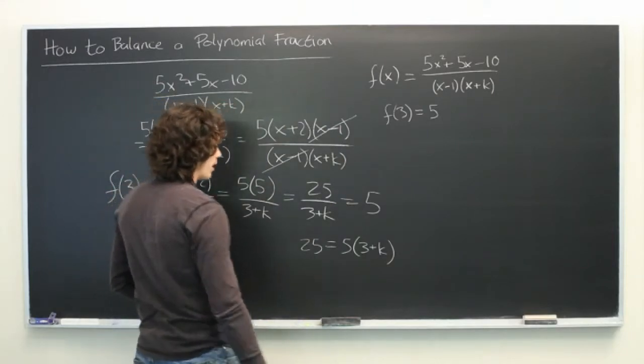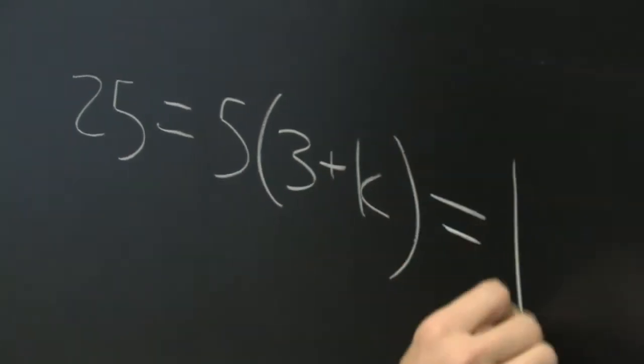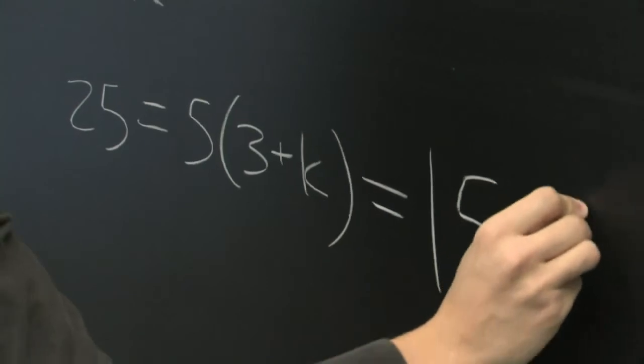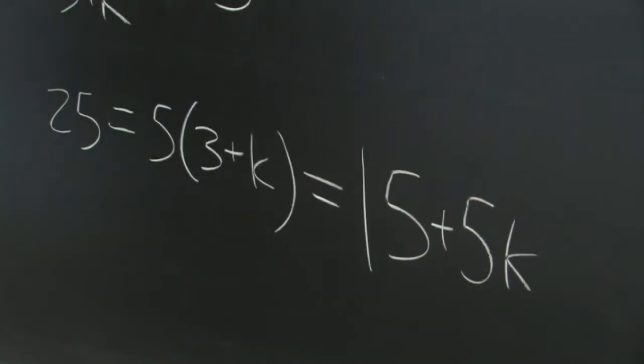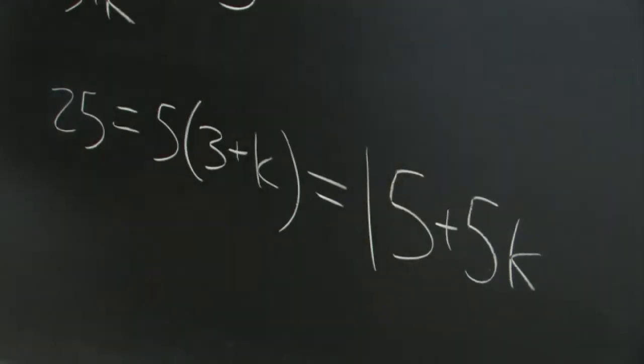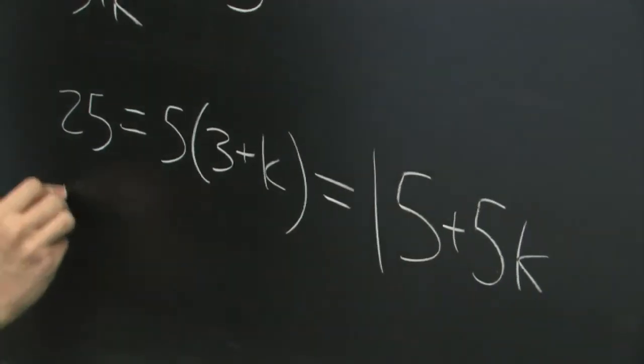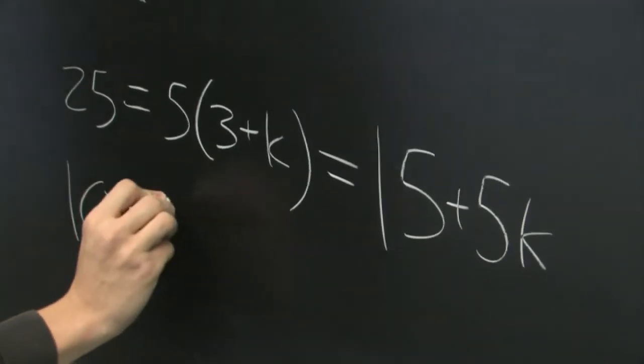We'll go ahead and distribute that. We get 15 plus 5k. Subtract 15 from both sides of this equation. We get 10 equals 5k.